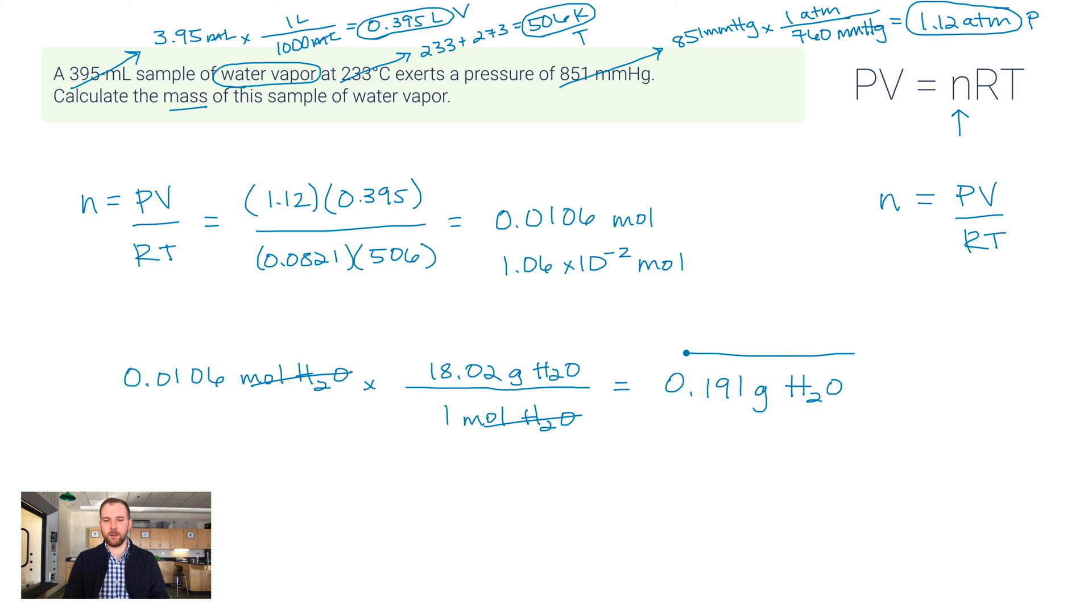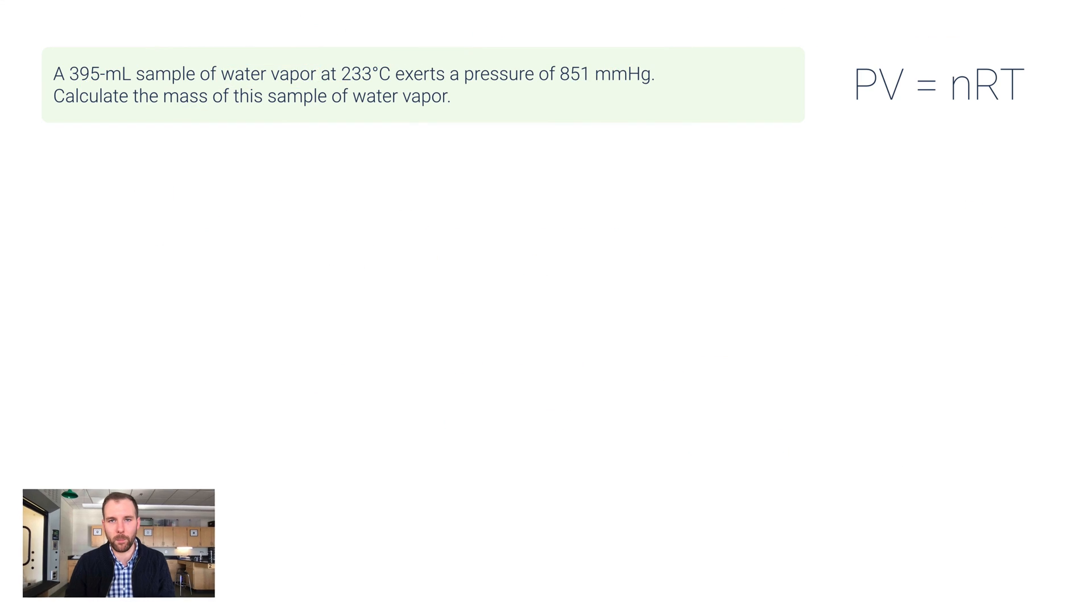We talked about scientific notation just a second ago. This might be another good candidate for scientific notation. Maybe not. It really depends on what you prefer or what your teacher prefers. But this could also be 1.91 times 10 to the negative first grams of water. Both of those are the same value. These get a lot smaller in some other problems, times 10 to the negative fourth or seventh. Then you're going to want to use scientific notation because a bunch of those leading zeros is just kind of a pain.